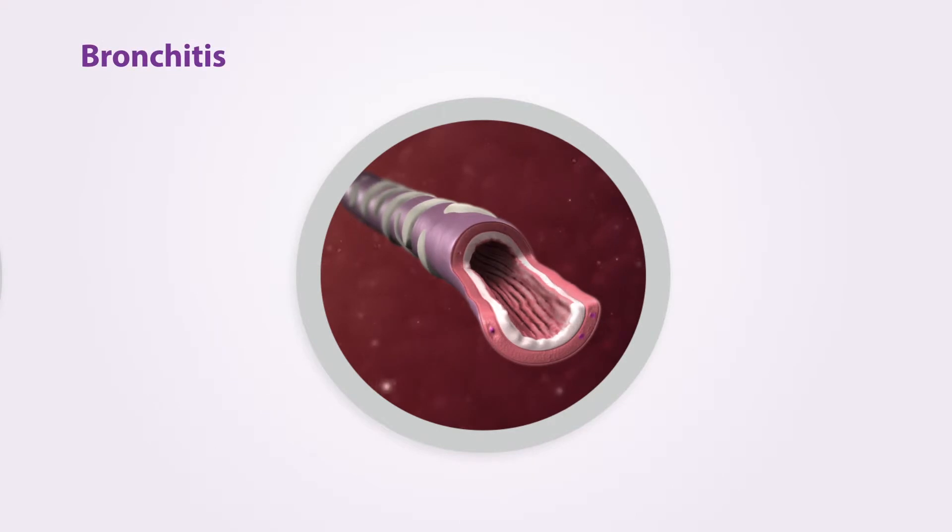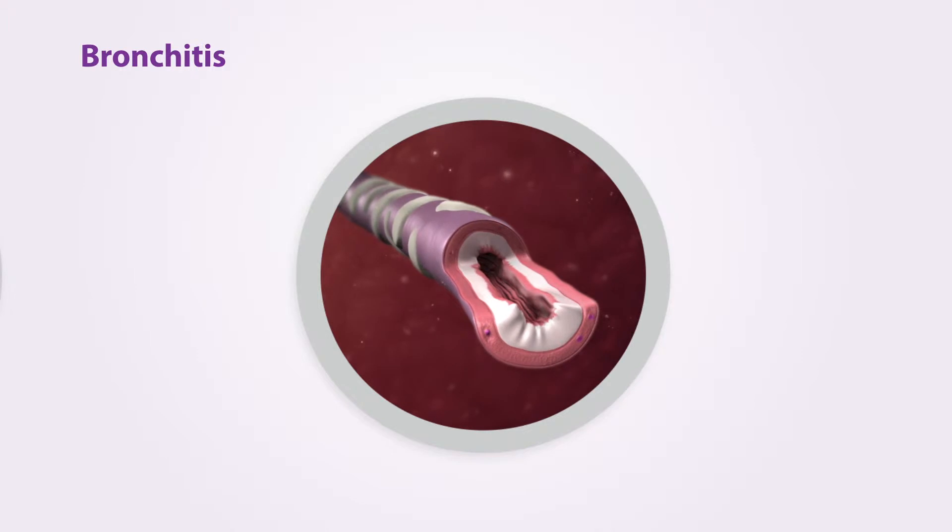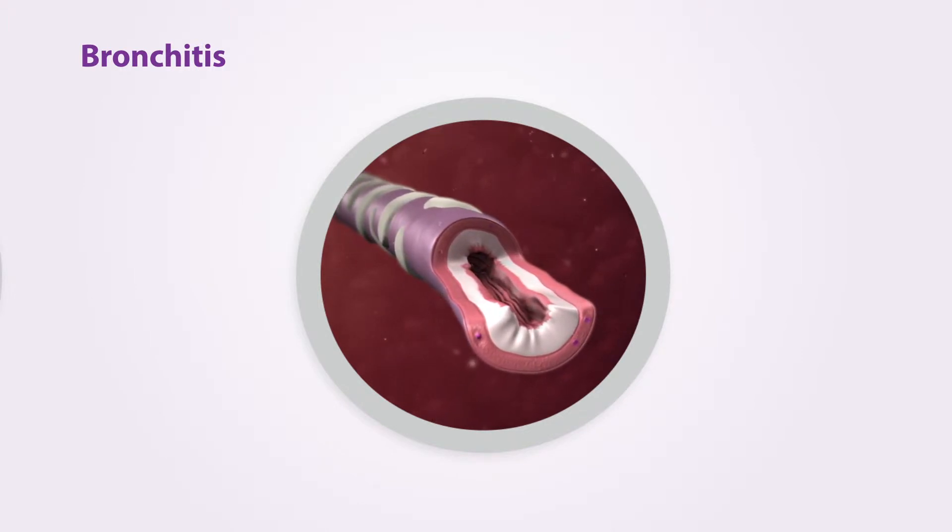Bronchitis causes the lining of the bronchioles to swell, thicken and produce mucus as a protective response. Chronic bronchitis often progresses to respiratory distress requiring acute treatment.